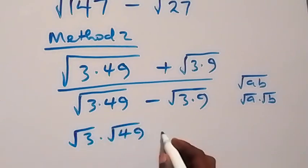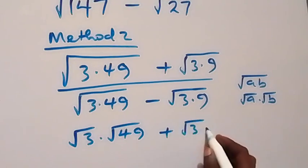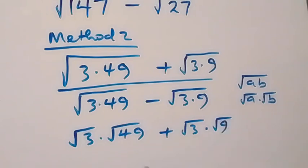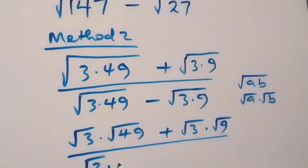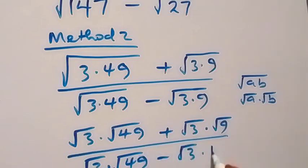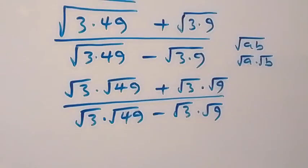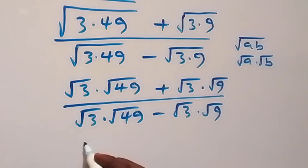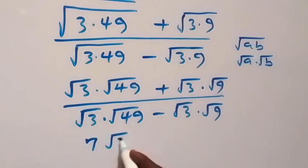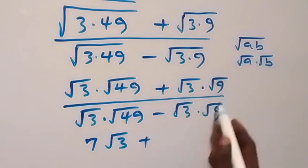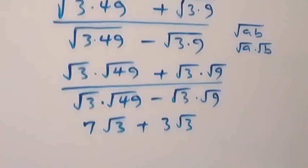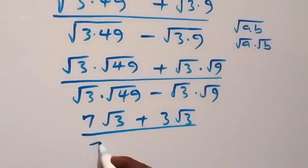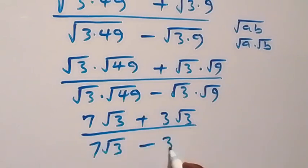Then plus root 3 times root 9, over here we have root 3 times root 49, then minus root 3 times root 9. So root 49 is 7, giving us 7 times root 3, and root 9 is 3, giving us 3 root 3 in the numerator. Divided by 7 root 3 minus 3 root 3 in the denominator.